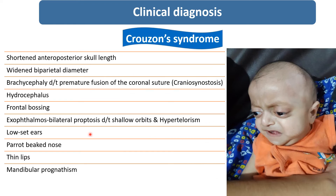The diagnosis will be Crouzon syndrome, in which the child will have the characteristic abnormal shape of the skull due to premature closure of the coronal suture — brachycephaly — and also abnormal facial features. You can see frontal bossing, exophthalmos, hypotelorism, peaked nose, low set ears, thin lips, and mandibular prognathism.